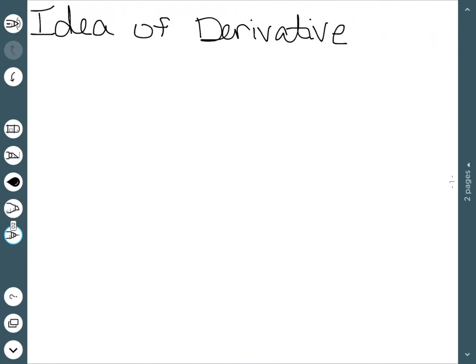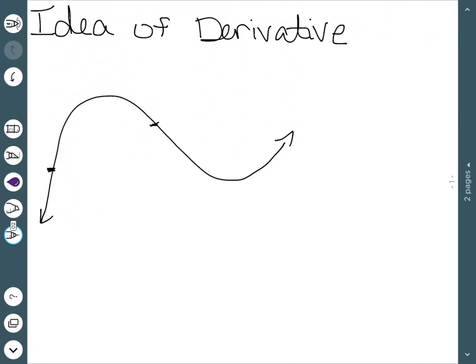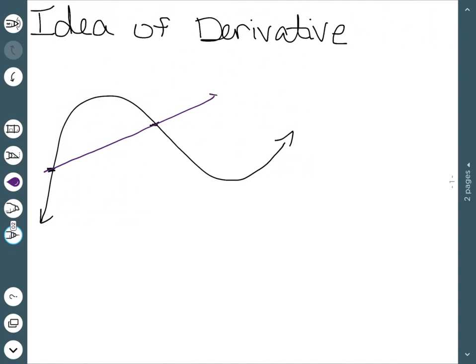Essentially, the idea of a derivative is if we want to know how quickly something is changing, we can look at the slope, but we need two distinct points. So if I have a graph and I want to look at the rate of change between these two points, I can just draw a line between them and find the slope of that line. But the idea of a derivative is we want to know the rate of change at a single point rather than through a group of points.